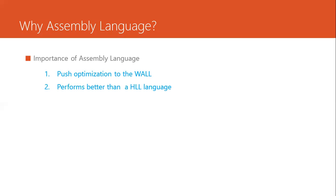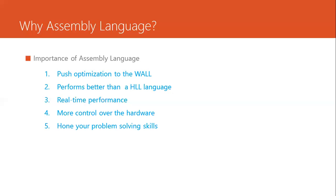Assembly language is fast — a well-written program in assembly will often perform better than one written in a high-level language. For example, if you have an application that needs to run in real time, you need real-time performance. Real-time processing requires that some instructions or functions or modules finish before a certain deadline, or bad things could happen. Without a good understanding of assembly language you won't have a good idea of how high-level code is compiled to a machine-level binary stream and how that runs on hardware. Assembly language makes you a better programmer and gives you more control over the hardware.